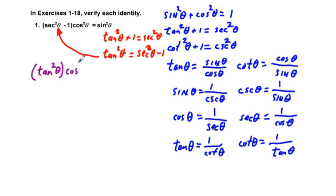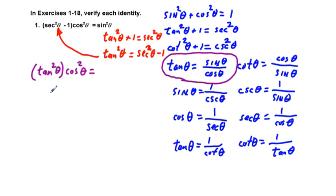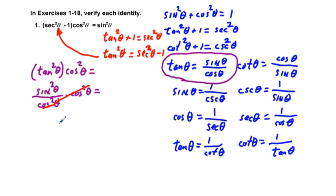That's times cosine squared theta. Using our quotient identity, tangent squared theta equals sine squared theta over cosine squared theta, and we bring down the cosine squared theta. Cosine squared theta over cosine squared theta cancels to equal 1, so we're left with sine squared theta on the left side, which equals sine squared theta on the right side. Check.